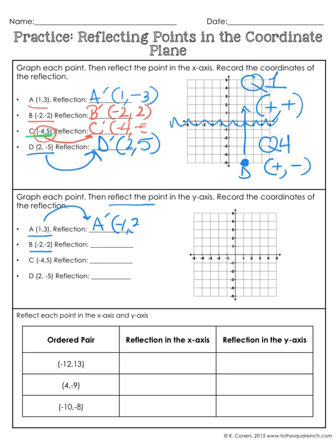Point B is at (-2, -2) — here's point B. We're still reflecting across the y-axis, so to cross it we'd have to go to the right. This is quadrant 3, which is negative, negative. We're crossing over to quadrant 4, so B' should have positive x-values and negative y-values. We change this ordered pair to (2, -2).